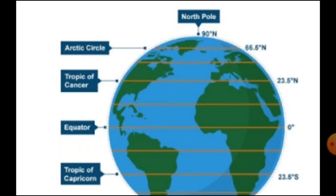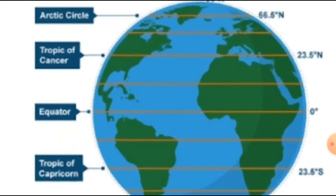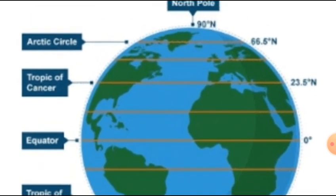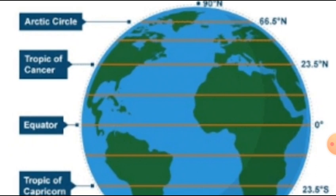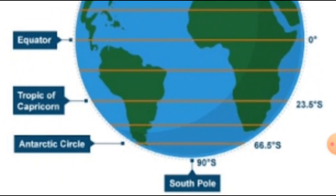Here we can see a simple example. The equator is in the middle at 0 degree. As you go from the equator towards the North Pole, the line gets smaller — the Arctic Circle line is small, while the Tropic of Cancer is bigger. Similarly, moving toward the South Pole through the Tropic of Capricorn and Antarctic Circle, the line gets shorter as it approaches the pole.